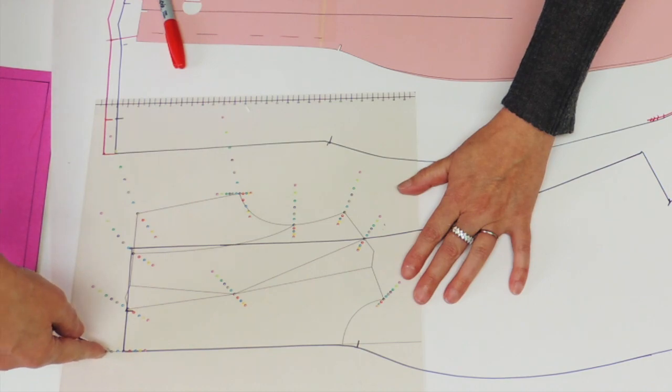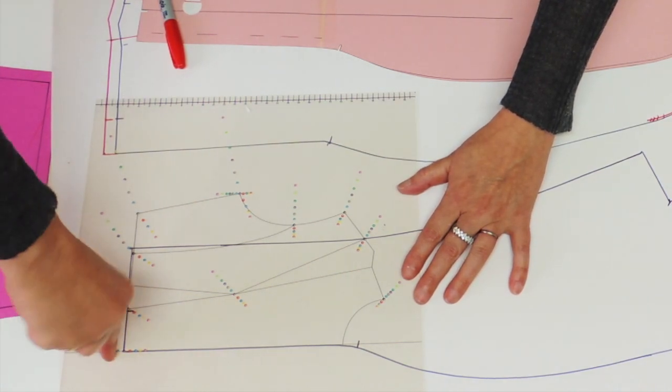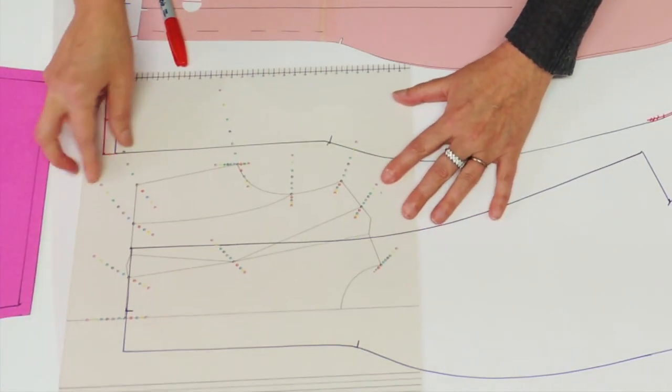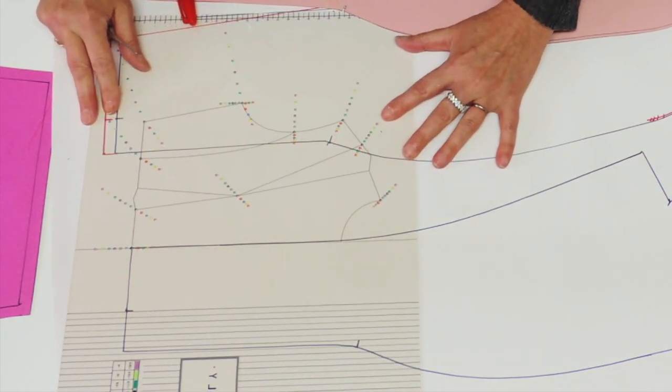So you're going to use the same center front waist point grading. So just place it on the black dot and use the same grade for me, two sizes bigger, on both sides of the facing.